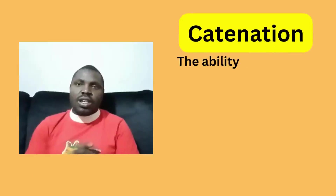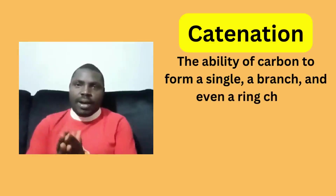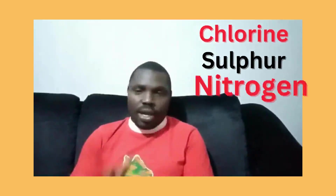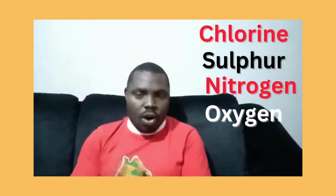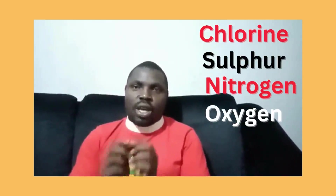I'm sure you have heard about catenation, which is the ability of carbon to form a single, a branch, and even a ring chain. That's carbon — carbon can do that, and not any other element can actually do such. Now, there are other elements that we also consider in the study of organic chemistry: chlorine, sulfur, nitrogen, and oxygen. But the main element of organic chemistry is carbon.